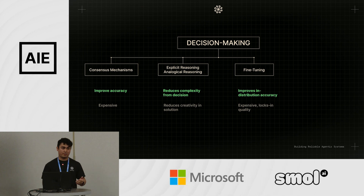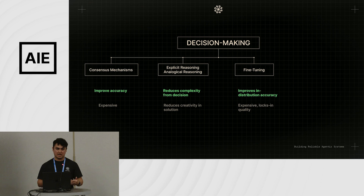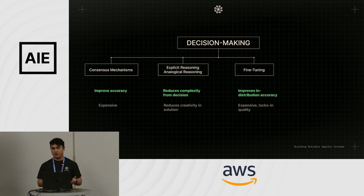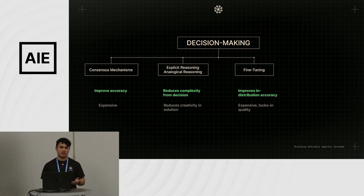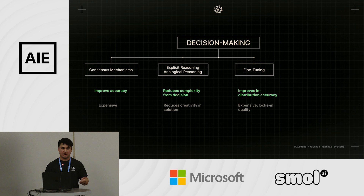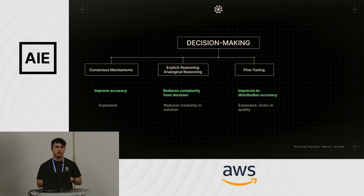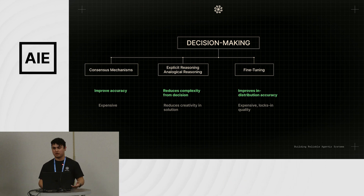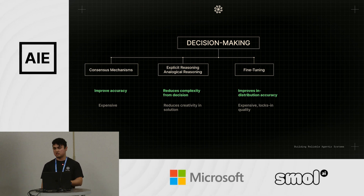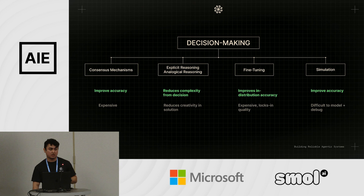Fine-tuning is kind of a cop-out answer, but it is actually pretty valuable once you have data for specific decisions. It may just be true that the best thing is to spend a weekend pulling the latest open source model, generate training data with a high-quality model, validate it with your team, and fine-tune. It's expensive and locks in quality — the benefit of relying on frontier models is your system improves with every new release — but for decisions that are really out of distribution, fine-tuning is a pretty effective approach.